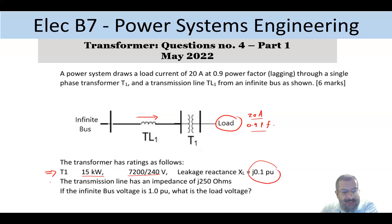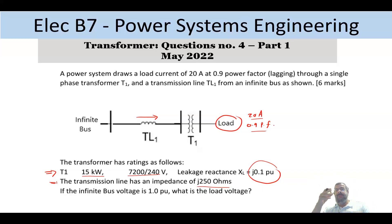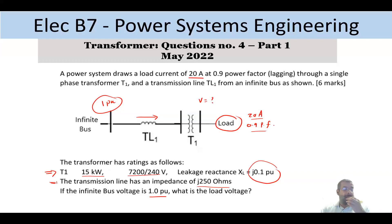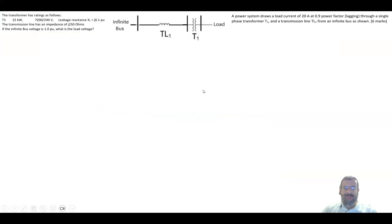The transmission line has an impedance of j250 ohms. So we have a mixed system: the transformer is in per unit and the transmission line is in ohms. The bus voltage is given as one per unit, and we want to find the load voltage. It's a mixed system between per unit and physical units — so how do we deal with such a problem?